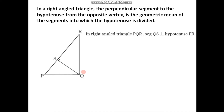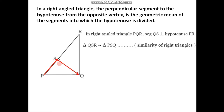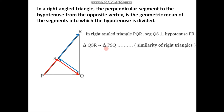By this property, triangle PSQ is similar to triangle QSR. To remember this correspondence: starting from P to S to Q gives triangle PSQ, and starting from Q to S to R gives triangle QSR. These are the two triangles we take, and by the similarity of right angle triangles, these two triangles are similar under this given correspondence.